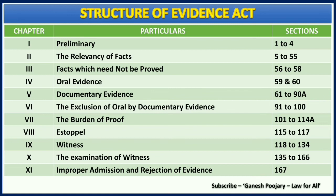Chapter 8 is on estoppel, covering three sections: 115, 116, and 117. Chapter 9 is all about witness, covering from section 118 to 134. Chapter 10 is on the examination of witness, covering from section 135 to 166, which is a quite lengthy chapter. And then we have the last chapter with just one section — section 167 in chapter 11 — covering the improper admission and rejection of evidence.